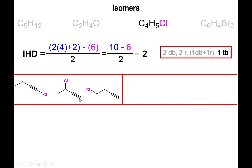You could also place the triple bond in the middle of the four-carbon chain. For this arrangement, the second and third carbons already have four bonds, so you can't add chlorine there. The only positions are the left end or right end, but because the molecule is free to rotate, those are the same molecule — so there is only one possibility for the centrally-placed triple bond.